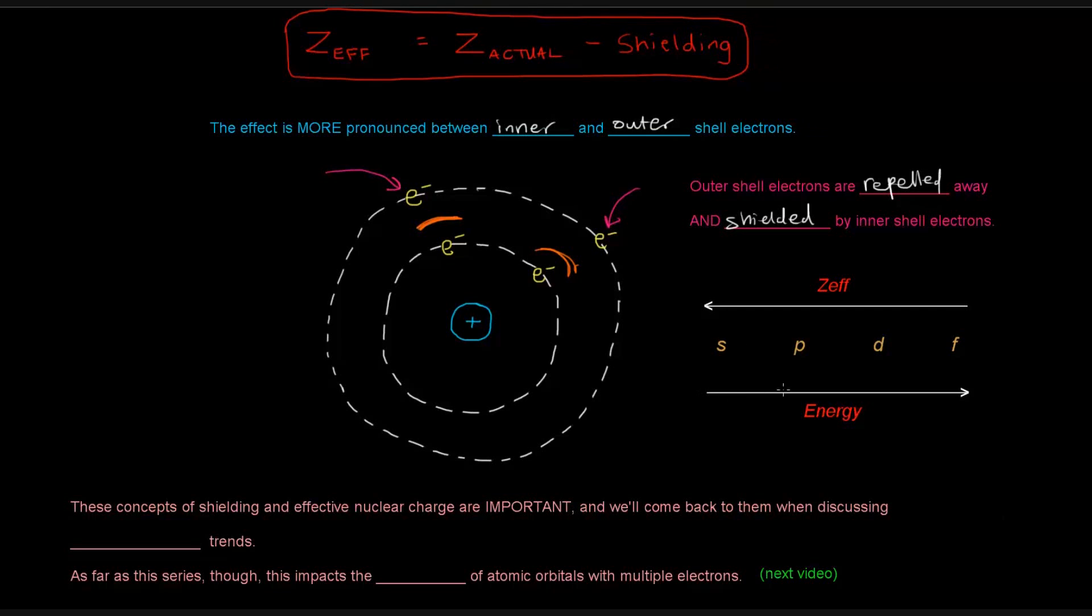as you go from S to P to D to F, you're going up higher in energy because the electrons are more likely to be further away from the nucleus. Thus, the effective nuclear charge, as you go from S to P to D to F, is decreasing.